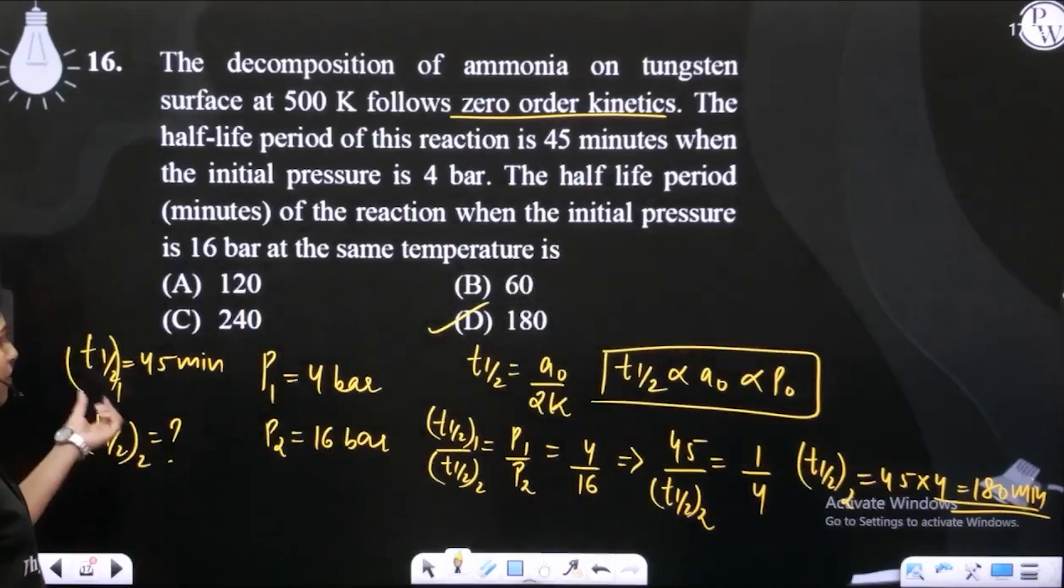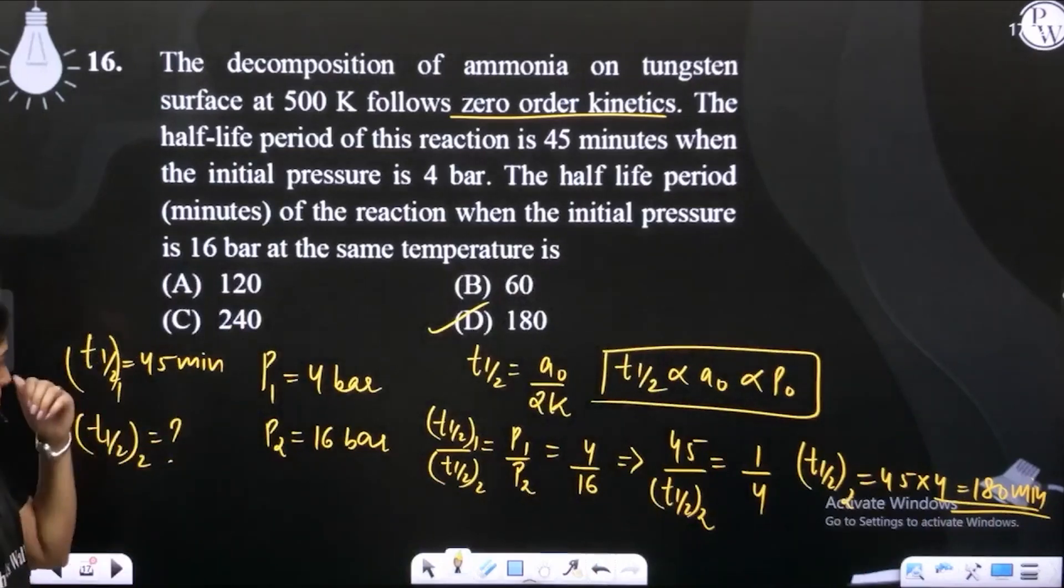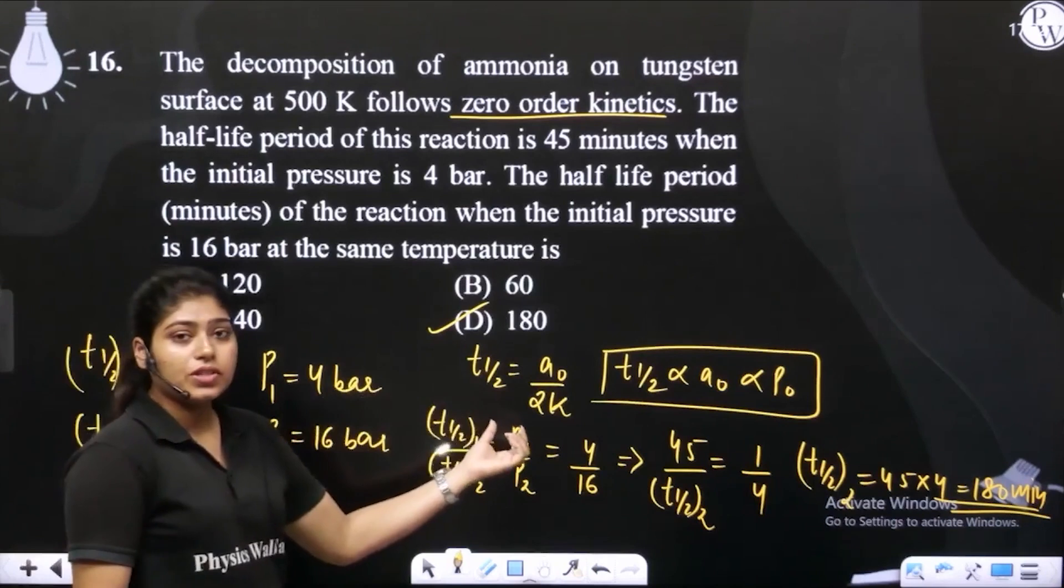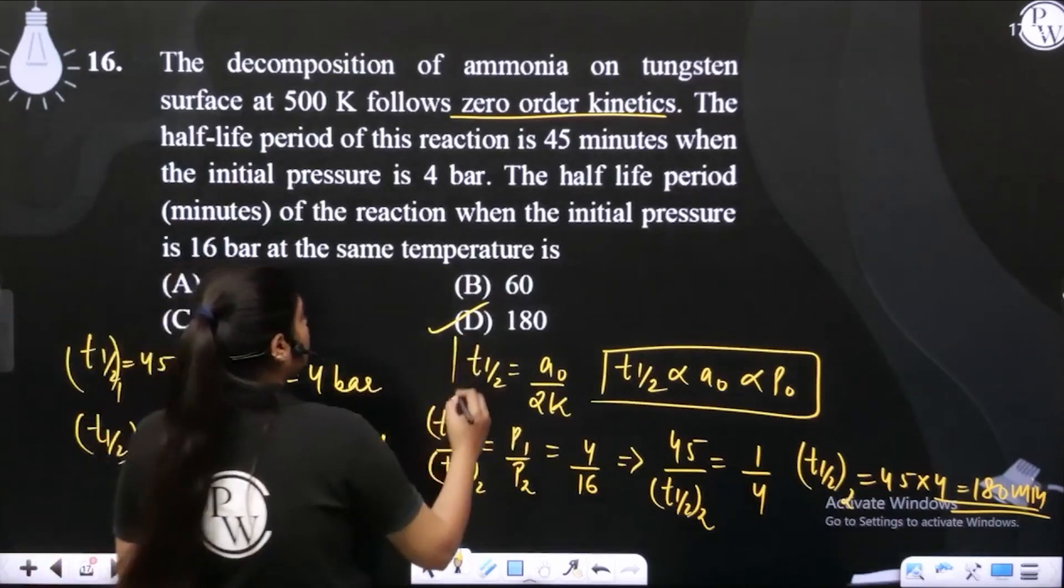Simple tha, humein half-life de rakhi thi 2 alag-alag initial concentrations pe. Humein bas relation pata hona chahiye tha, half-life for zero order.